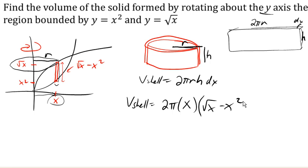So the volume of the whole solid we can get by integrating 2 pi x times root x minus x-squared dx from 0 to this intersection at 1. And there's the volume of this region rotated around the y-axis.